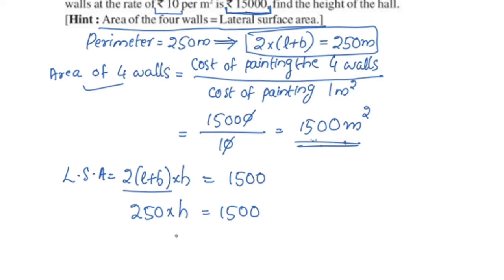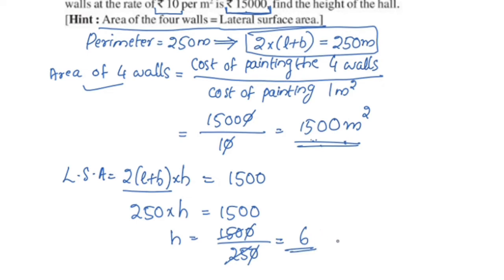So H equals 1500 divided by 250. Cancelling the zeros: 150 divided by 25 equals 6. Therefore the height of the hall is 6 meters.